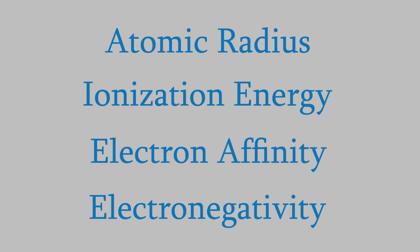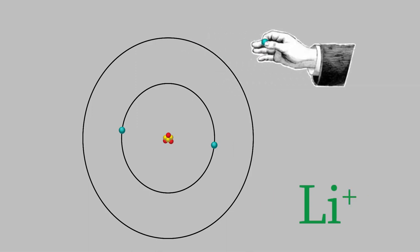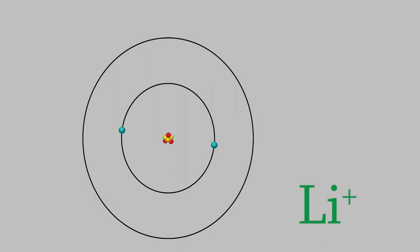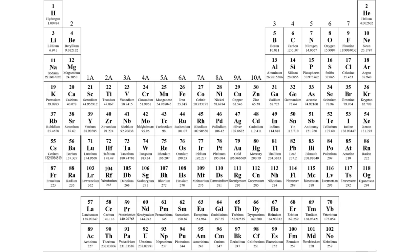First, we'll talk about the ionization energy. As we've mentioned before, we can form a positively charged ion by removing an electron from an atom. For example, if we have a lithium atom, we can make a lithium plus ion by removing an electron. It takes a certain amount of energy to do that. The electron has a negative charge, so it's attracted to the positive nucleus of the atom, so removing the electron takes effort. The process of removing the electron is called ionization, so the energy it takes to remove the electron is called the ionization energy. Some elements are easier to ionize than others, so each element has a different ionization energy, and we can use the periodic table to predict which elements have a higher ionization energy than others.